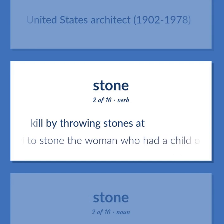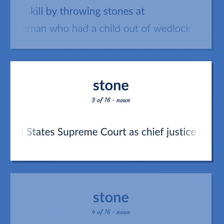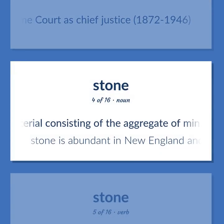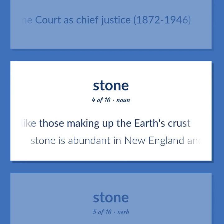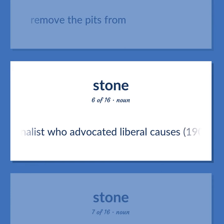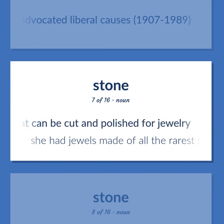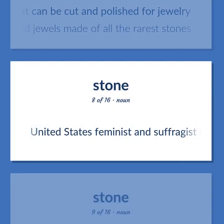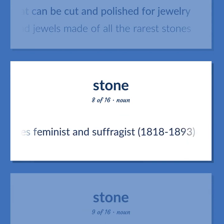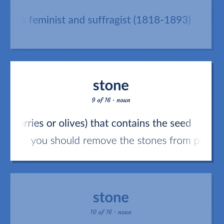Kill by throwing stones at. People wanted to stone the woman who had a child out of wedlock. United States jurist who served on the United States Supreme Court as Chief Justice, 1872–1946. Material consisting of the aggregate of minerals like those making up the earth's crust. Stone is abundant in New England and there are many quarries. Remove the pits from. United States journalist who advocated liberal causes, 1907–1989. A crystalline rock that can be cut and polished for jewelry. She had jewels made of all the rarest stones. The hard inner, usually woody, layer of the pericarp of some fruits — as peaches, plums, cherries, or olives — that contains the seed. You should remove the stones from prunes before cooking.